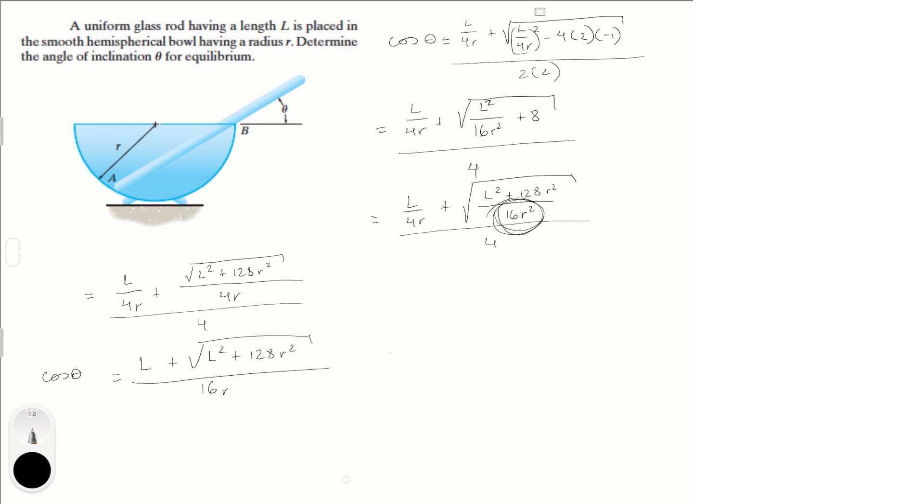And now we solve for theta. We have cosine inverse of this mass. L plus square root L square plus 128R square over 16R.